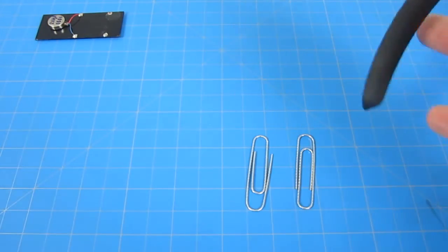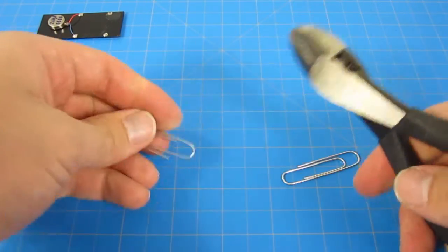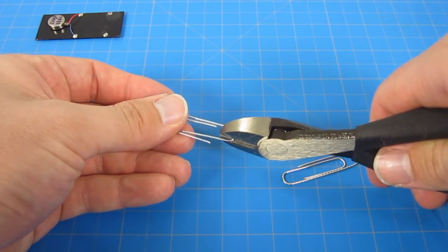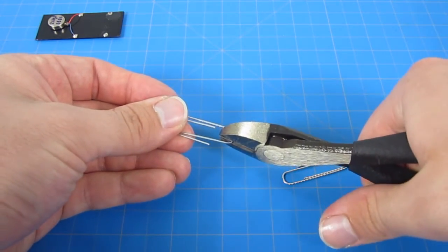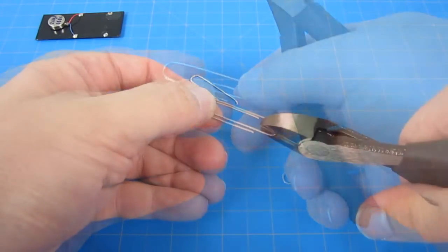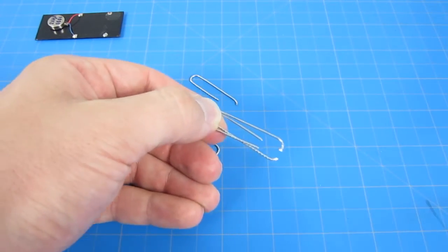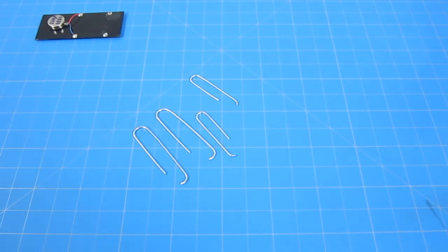Now that your motor is firmly attached to your solar panel, it's time to give your cockroach some legs. Using your wire cutters, cut apart both paper clips at the narrow end. You should wind up with two large pieces and two smaller pieces that look about like this.